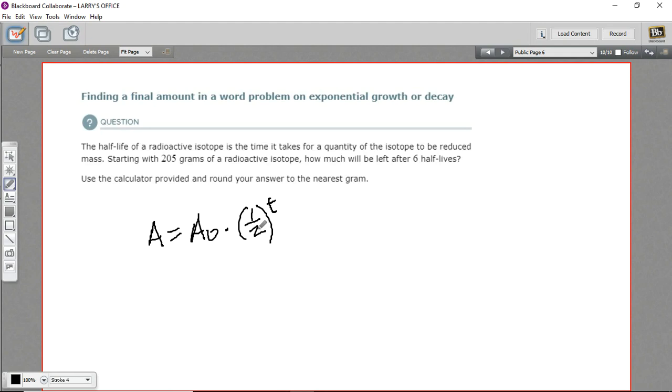And the half-life is the period it takes for half of it to go away, so the time period in which it's reduced by half. When we calculate the amount that's left of a radioactive element or isotope like this, we take the initial amount, this A₀, and we multiply it by one half, that's for half-life, raised to the t power. And t would be the number of half-lives.